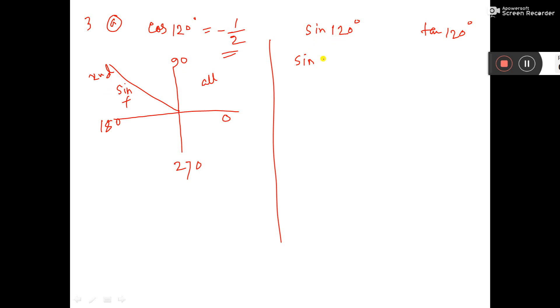And here, sin 120°, you break down: 1 into 90 plus 30 degree. So sin 1 into 90, that is odd multiple. So sin will be cos 30 degree.